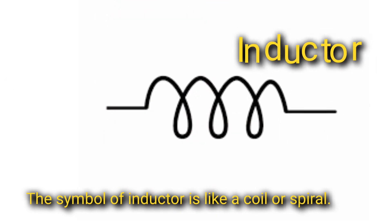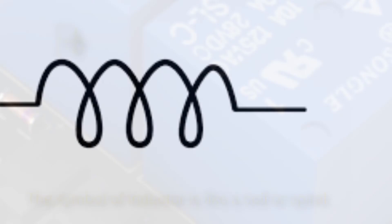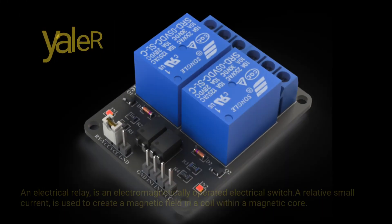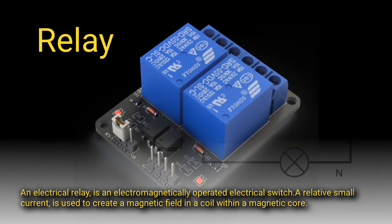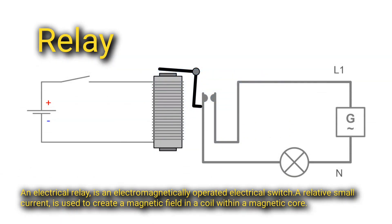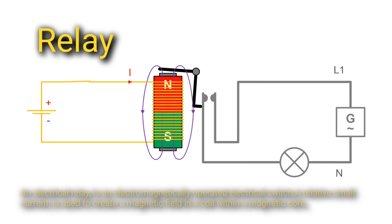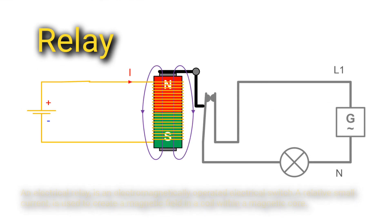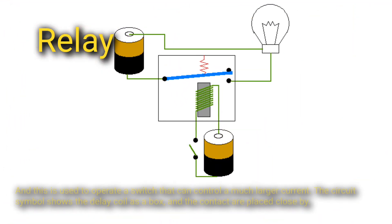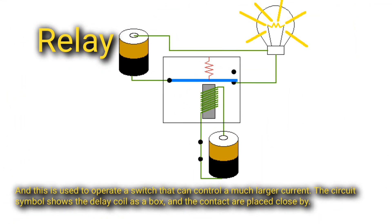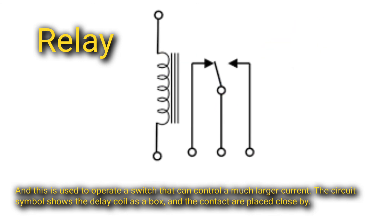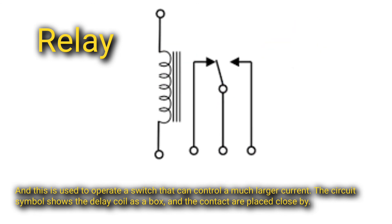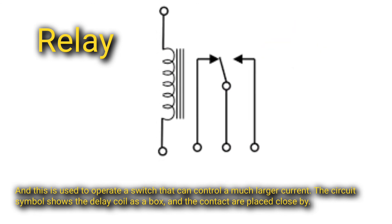Relay: an electrical relay is an electromagnetically operated electrical switch. A relatively small current is used to create a magnetic field in a coil within a magnetic core, and this is used to operate a switch that can control a much larger current. The circuit symbol shows the relay coil as a box, with the contacts placed close by.